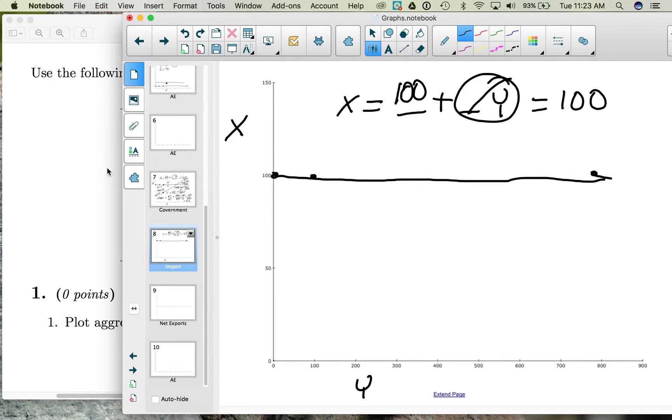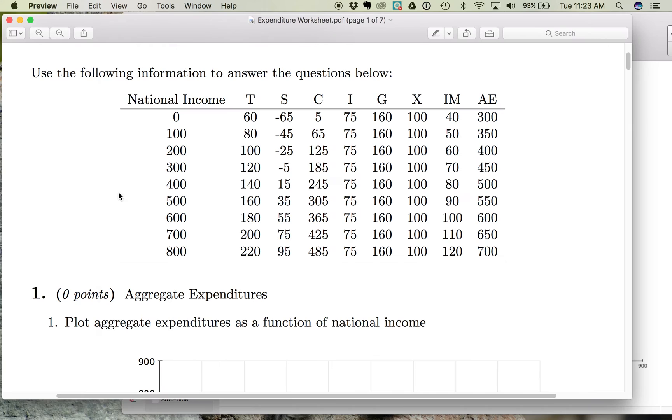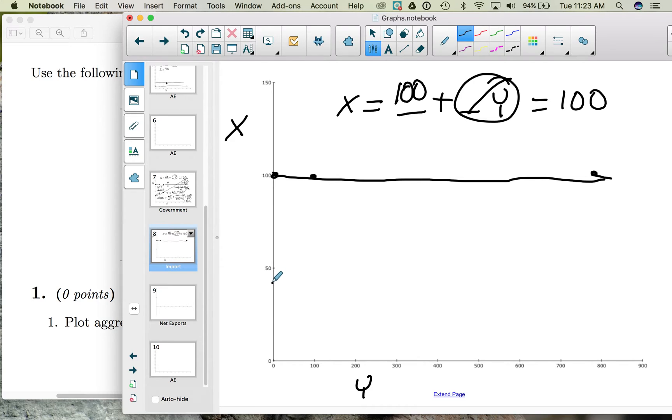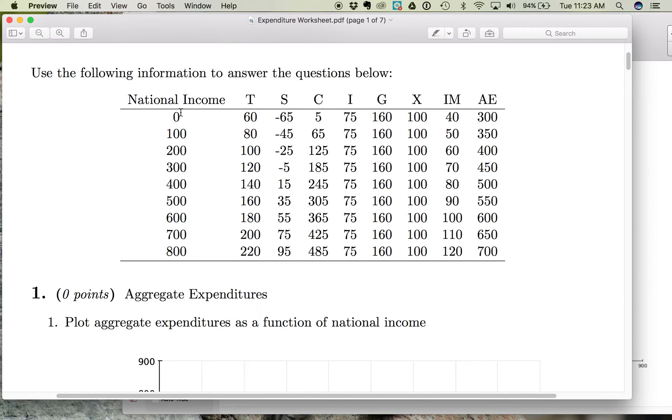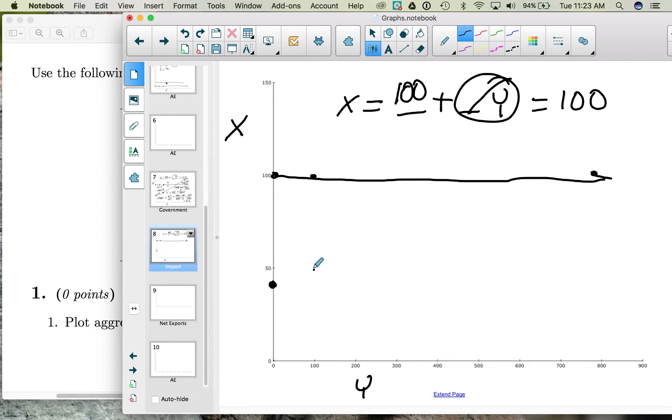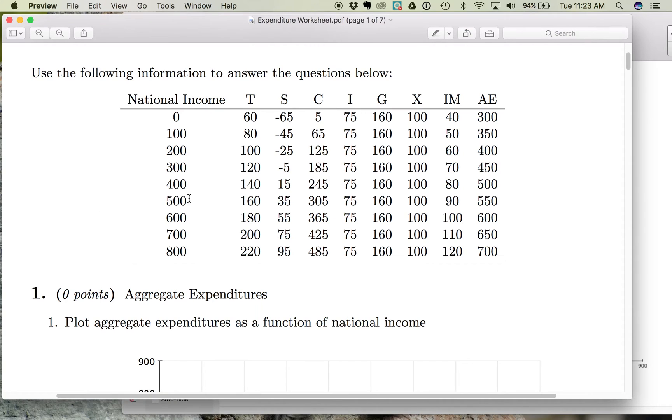Now let's look at import spending. Import spending is when we bring the goods in and the money is going out. So this is done by us in our economy. So when income is zero, import spending is 40. When income is 100, import spending is 50. And we can continue to plot what's happening to imports as we increase income.